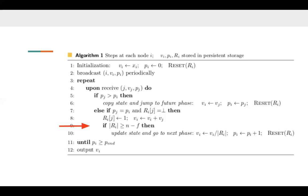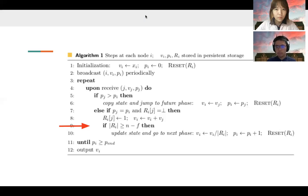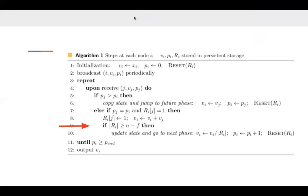When node i received at least n minus f messages of the same phase, in other words, when the size of ri is greater than or equal to n minus f, then it proceeds to the next phase. More specifically, it updates its phase to pi plus 1, and then updates its local state to vi over the size of ri. The reason of dividing vi by the size of ri is that node i is taking the average of all the received messages as the new state.